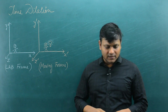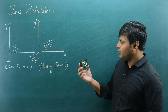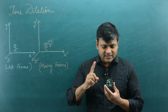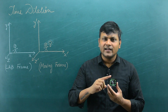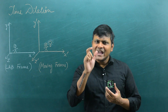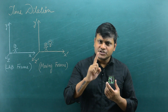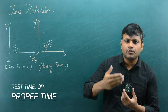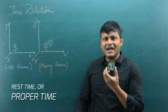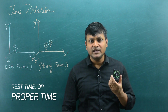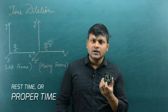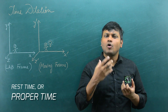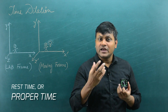For example, if I have a simple clock with me — you know how clocks work, it goes tick, tick, tick — this time period gives us an idea about its proper time. I have this clock with me at rest, so the time periods I measure are the proper time, the rest time.